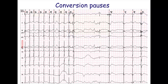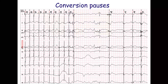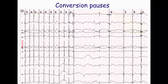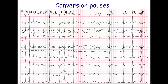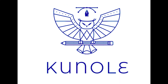Conversion pauses are a distinct type of sinus node dysfunction. They occur after the termination of atrial fibrillation, atrial flutter, or supraventricular tachycardia, before sinus rhythm is restored. This ECG shows a 3.7-second conversion pause after the termination of atrial fibrillation. Conversion pauses may be present even in the absence of other signs of sinus node dysfunction.